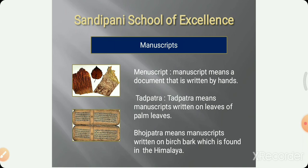We will first learn about manuscripts. Manuscripts are of two types. A manuscript means a document that is written by hand. It is a handwritten document. Taad patra means a manuscript written on the leaves of palm trees.